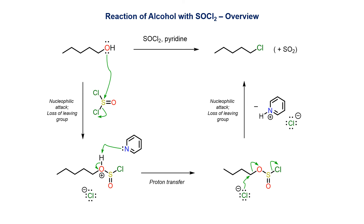The conversion begins with the nucleophilic alcohol attacking the electrophilic sulfur on thionyl chloride and displacing a chloride ion as a leaving group. The resultant alkoxonium ion is then deprotonated by pyridine to give the neutral sulfonyl chloride. This then undergoes an SN2 reaction with chloride anion to give the alkyl chloride product. Loss of SO2 as a gas makes this step irreversible.